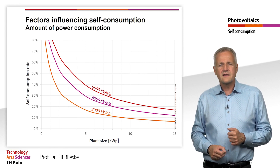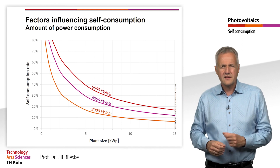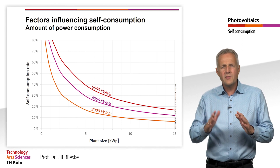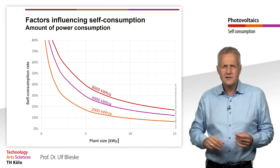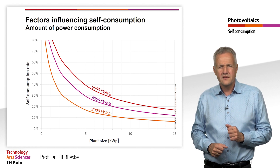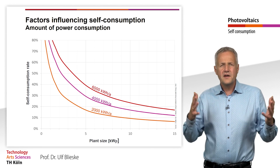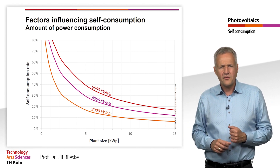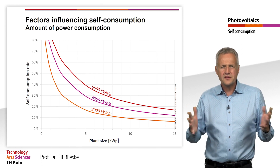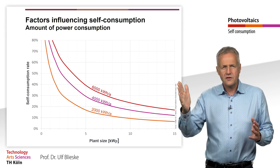Here you can see the self-consumption rate that results for different plant sizes. For this purpose, an optimally inclined and south-facing system in Cologne was assumed. In addition to the plant size, the self-consumption rate also depends on the annual electricity consumption of the household. We can clearly see that the possible self-consumption rate decreases with increasing size of photovoltaic systems.